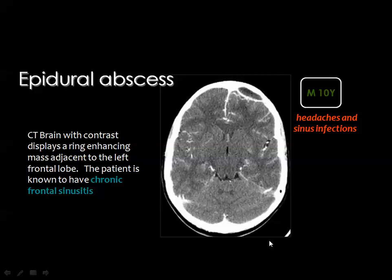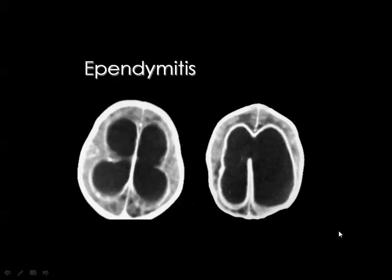A subdural empyema in the posterior falx cerebri shows low signal in T1, high signal in FLAIR and T2-weighted images with uniform thick marginal enhancement. The surrounding high signal represents reactive brain edema. Diffusion-weighted imaging shows evident restricted diffusion. An epidural abscess or empyema shows the collection bordered by thick enhanced meninges. When infection reaches the ventricle, it results in inflammation of the ventricular wall with intense uniform enhancement, known as ependymitis or ventriculitis.